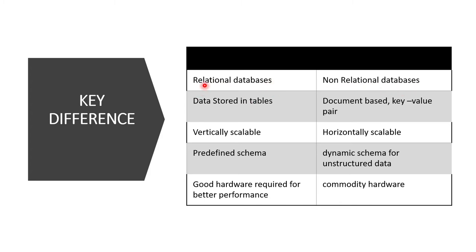In a relational database, data is stored in the form of tables — it has rows and columns. When we say non-relational database, it is document-based, like MongoDB, where you have a key-value pair.